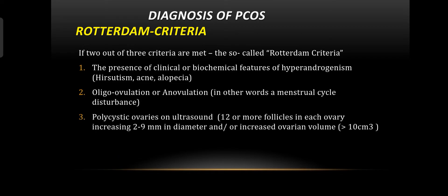The third criterion is polycystic ovaries on ultrasound. Ultrasound features are 12 or more follicles in each ovary measuring 2 to 9 mm in diameter, and/or increased ovarian volume of more than 10 cubic centimeters.